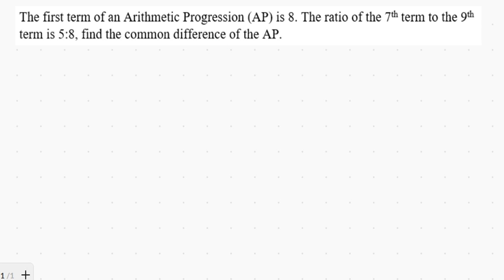Okay, so let's solve this right away. Let's take the question again. The first term of an arithmetic progression is 8, meaning the first term, let's represent it as a, so a equals 8, which is the first term.